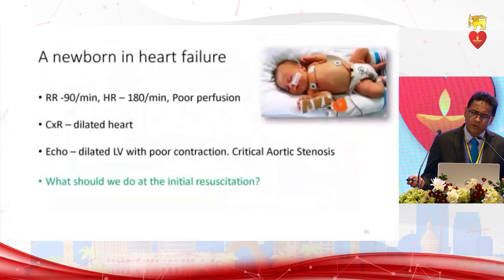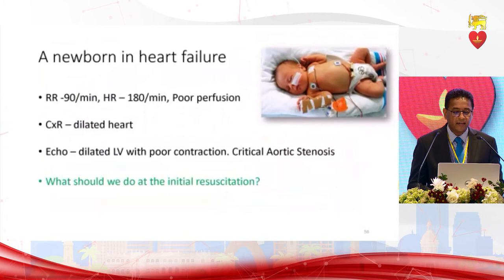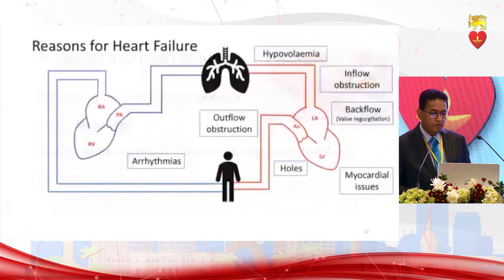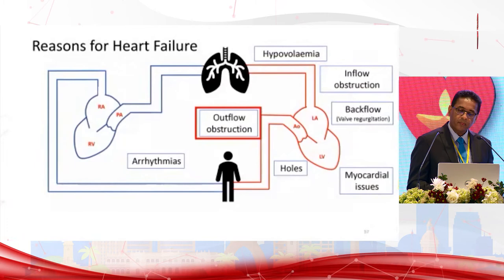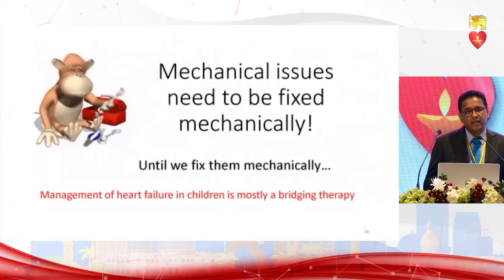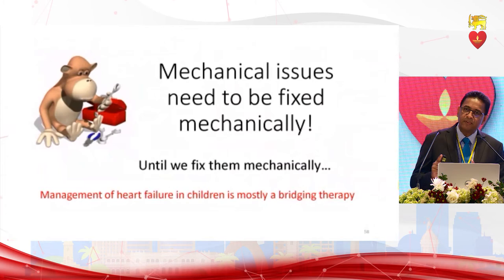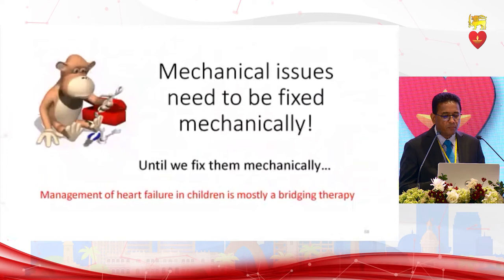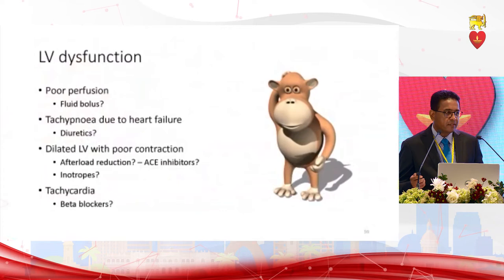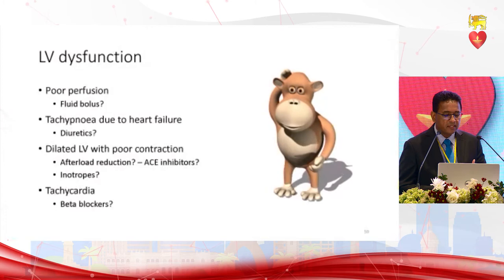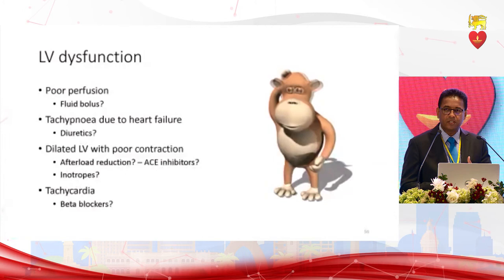Case 2: A newborn in heart failure — respiratory rate 90, heart rate 180, poor perfusion. Chest X-ray: dilated heart. Echo: dilated LV with poor contractility. Cause: aortic stenosis — an outflow obstruction. Most pediatric cardiac heart failure has mechanical issues that must be managed mechanically, but we need to bridge the patient until the mechanical fix. Should we give a fluid bolus, diuretics, afterload reduction, ACE inhibitors, inotropes, or beta blockers?